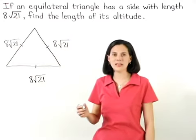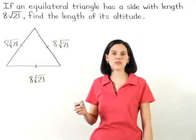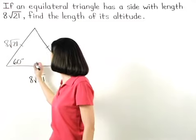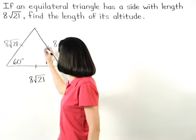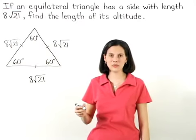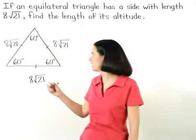And remember that each angle of an equilateral triangle measures 60 degrees. Next, let's draw an altitude of our equilateral triangle.